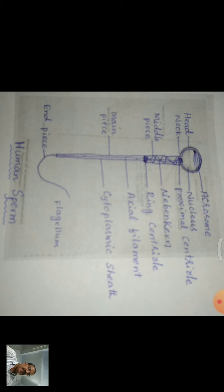The head contains cytoplasm, nucleus, acrosome, and a haploid set of chromosomes. It is covered by a plasma membrane. The acrosome is formed by the Golgi apparatus and contains hydrolytic enzymes like hyaluronidase enzyme, which helps in the dissolution of egg membranes during fertilization.